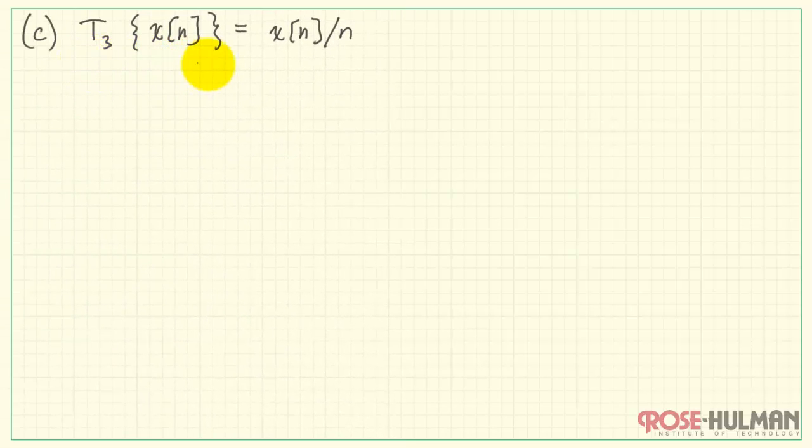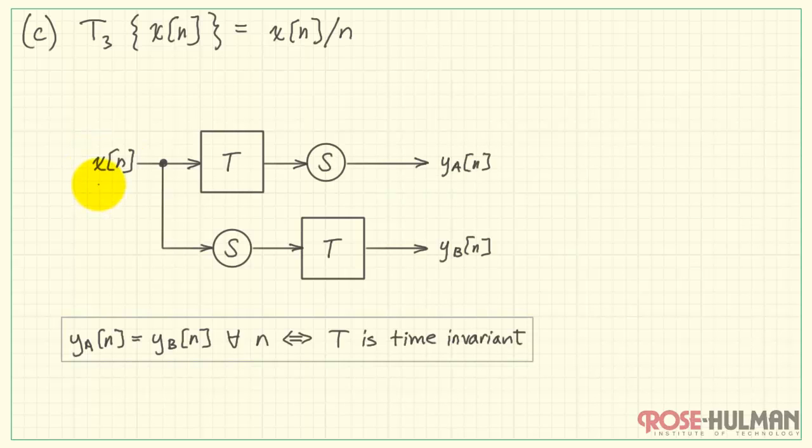The third system is T3, X of n divided by the time sequence index n. So as before, we pass X through our system, X of n divided by n, and then we shift.